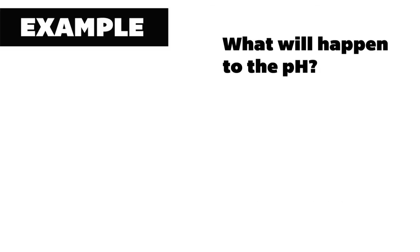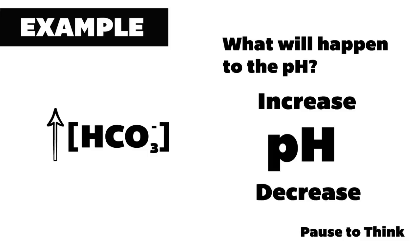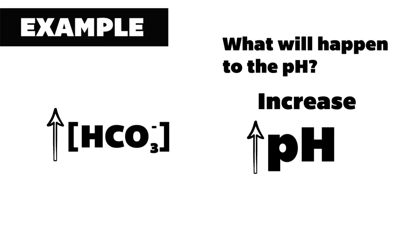And our last example, let's say a person has an increase in overall body concentrations of bicarbonate. What will happen to this person's pH? An increase in bicarbonate concentration of the body will lead to an increase in pH.